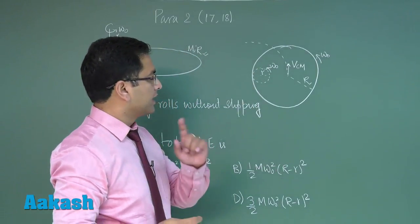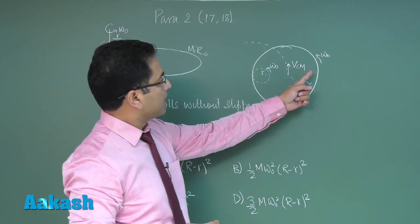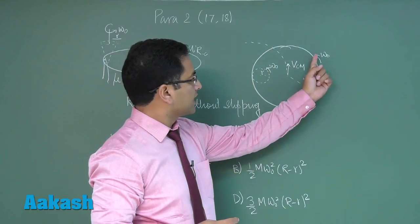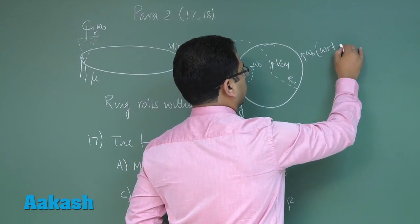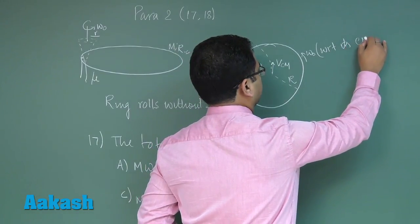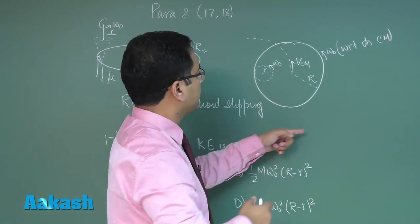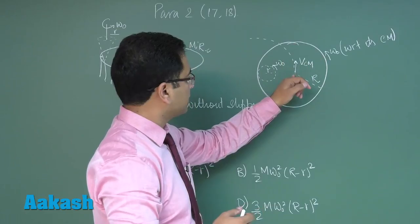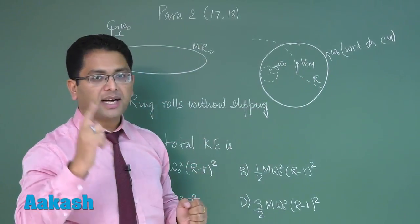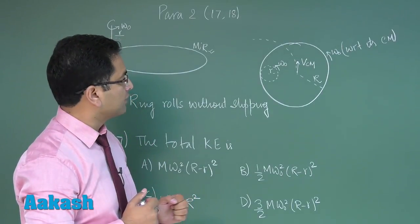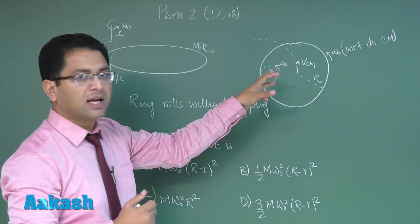Here you need to understand omega naught of the ring that we have considered is with respect to its center of mass. So omega naught is the angular velocity of the ring with respect to its own center of mass. This can be easily concluded because by the time the finger completes one revolution, the ring would have also rotated one complete revolution.